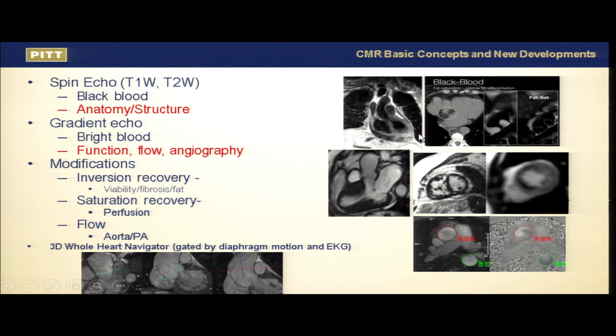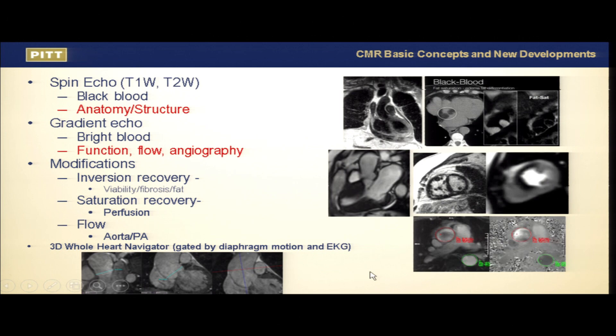Spin echo black blood images were how cardiac MRI started about 20 years ago — static images providing good anatomical detail. Then the development of gradient echo CINE sequences allowed us to see things in motion, measure flow, and do 3D reconstruction similar to CT.